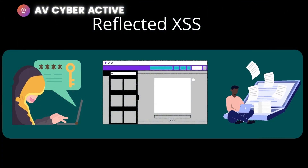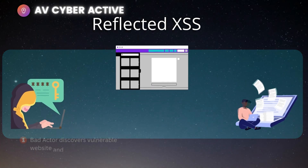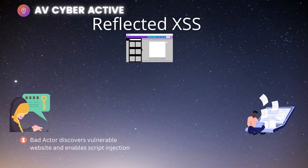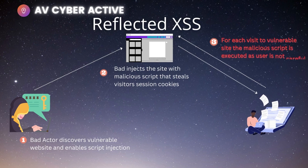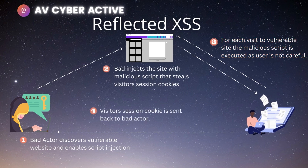Here's what's happening step by step. We have a perpetrator, a victim, and a vulnerable website. Step one: the perpetrator discovers the website's vulnerability and enables scripts for injection. Step two: the perpetrator injects a malicious script that steals visitor session cookies or confidential information. Step three — the most dangerous part: for each visit, the malicious script is reflected back at the victim and activated. Step four: the visitor's session cookie or secret information is sent back to the perpetrator, who can now use it to their advantage.